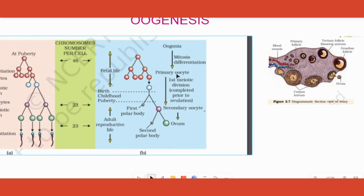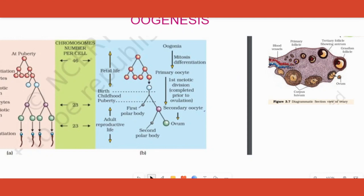Not all of them, but some of the primary oocytes start undergoing meiotic division. For example, out of one million, about ten thousand may be undergoing this division. But does it complete the meiotic division? No, not yet.